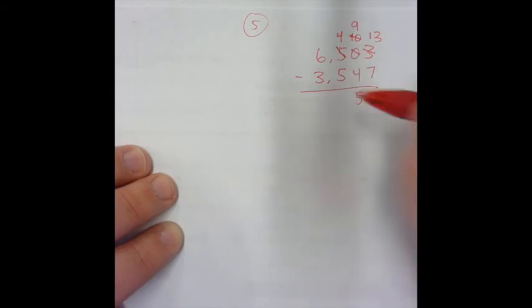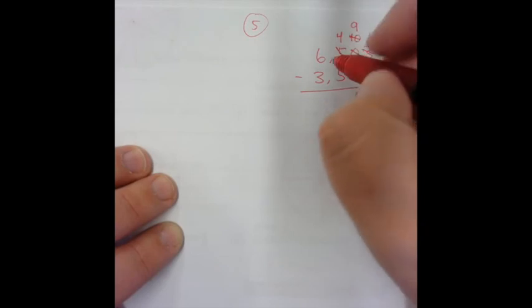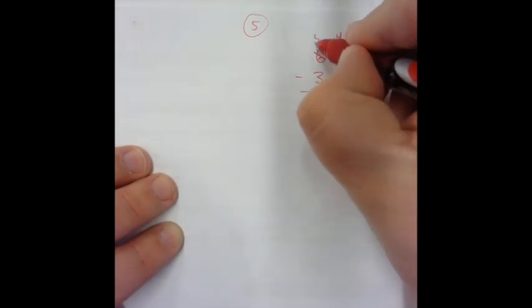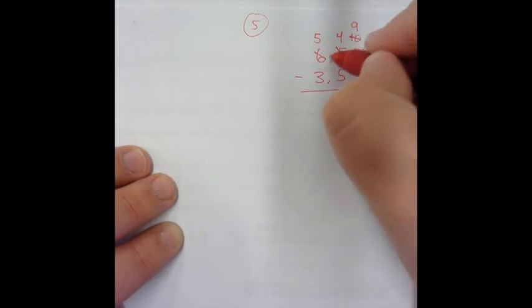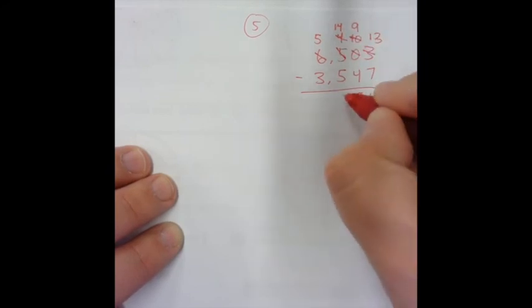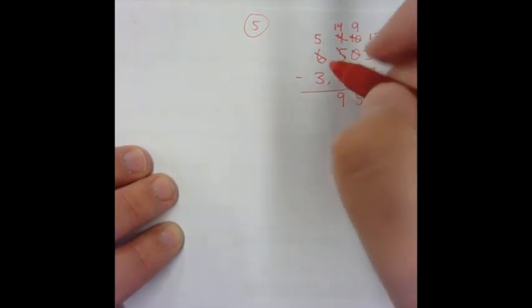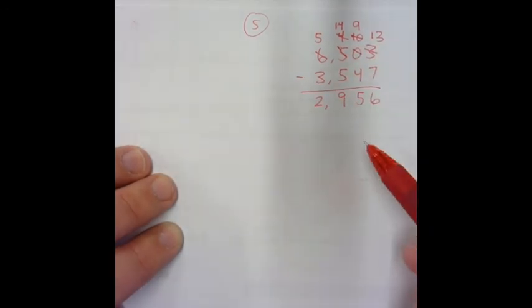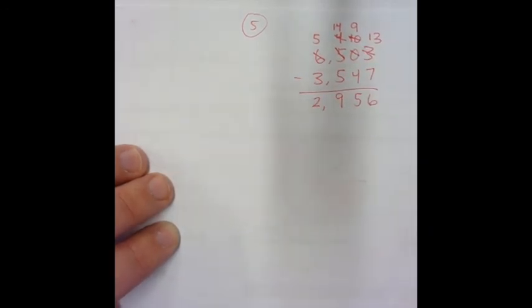4 take away 5, we are not able to do that, so we got to go now here to our thousands to trade. We're going to take a 1 away from the 6, that'll be 5. Now we're going to add our ten hundreds to the 4 that we already have, that will make it 14. 14 take away 5 is 9. 5 take away 3 is 2. So our answer is two thousand nine hundred and fifty-six. I'm going to go ahead and transfer my answer over here: 2,956.